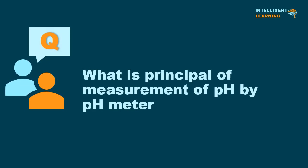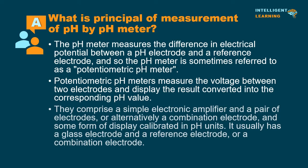What is the principle of measurement of pH by pH meter or potentiometric pH meter? The pH meter measures the difference in electrical potential between a pH electrode and a reference electrode, and so the pH meter is sometimes referred to as a potentiometric pH meter. Potentiometric pH meters measure the voltage between two electrodes and display the result converted into the corresponding pH value. They comprise a simple electronic amplifier and a pair of electrodes, or alternatively a combination electrode, and some form of display calibrated in pH units. It usually has a glass electrode and a reference electrode, or a combination electrode.